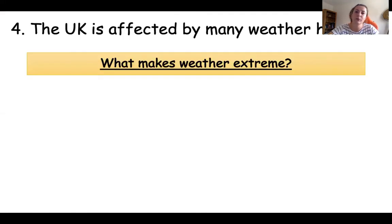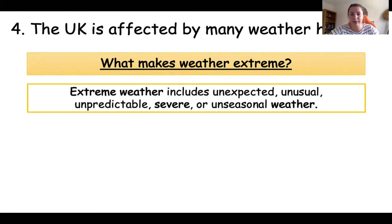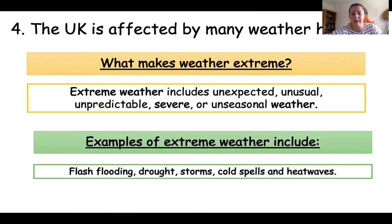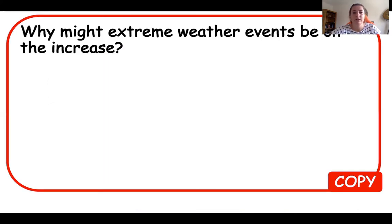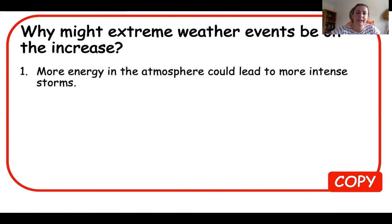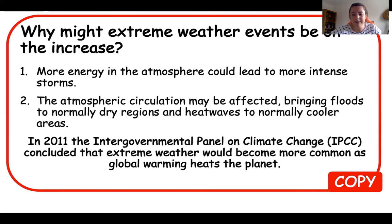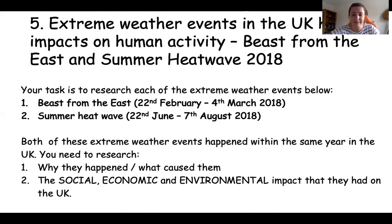Now we're looking at the UK and how it's been affected by weather hazards. First, what makes weather extreme? The definition is anything that's unexpected, unusual, or unpredictable. Examples of extreme weather in the UK include flooding, drought, storms, extreme cold spells, and long-lasting heat waves. These notes were on the PowerPoint as part of last week's home learning. Get down why extreme weather events might be on the increase.